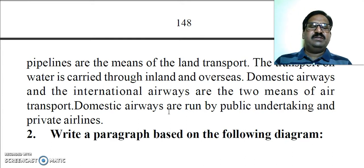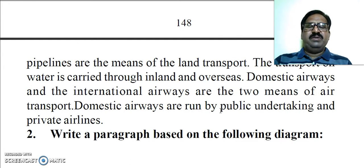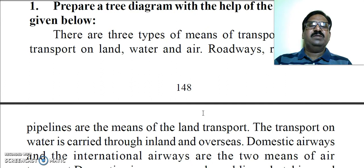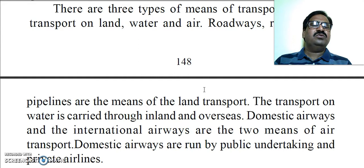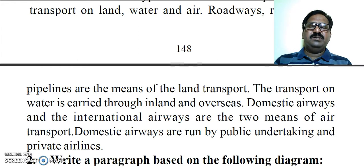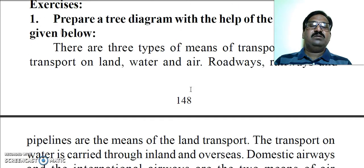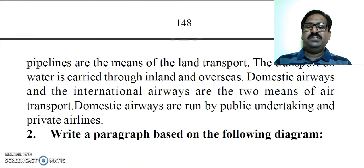Domestic airways are run by public undertakings and private airlines. So in this way, you can see three kinds of transports — road transport, water transport, and air transport — and how they are further divided into two or three parts. You can show this particular information in a tree diagram.